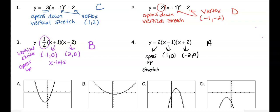Number three is the only equation with a fraction between 0 and 1, so it's going to be a wide graph due to the vertical shrink, with x-intercepts at negative 1 and positive 2. Number four has x-intercepts at positive 1 and negative 2, opening up with a vertical stretch. We can match all four graphs based on the information each equation form gives us.